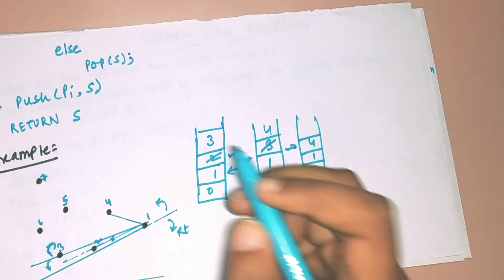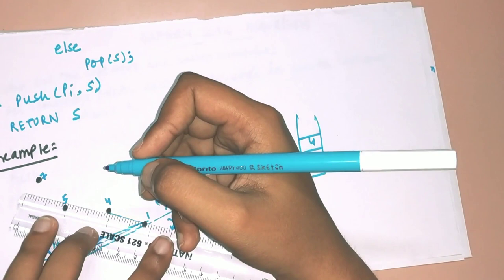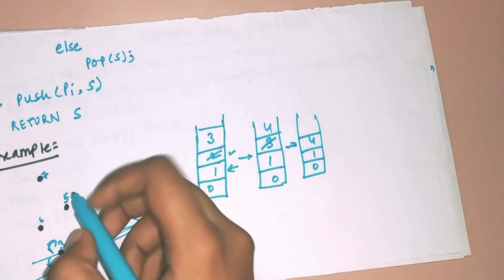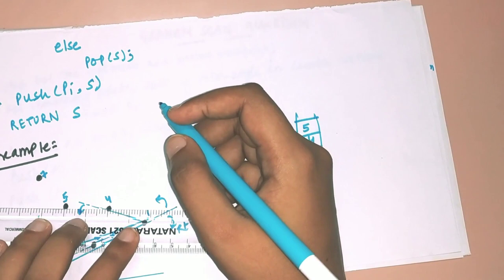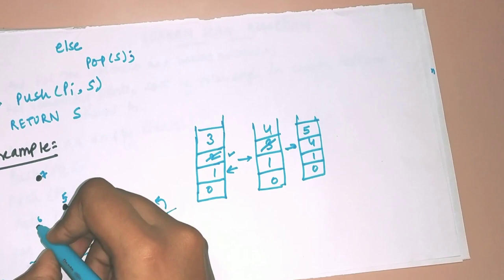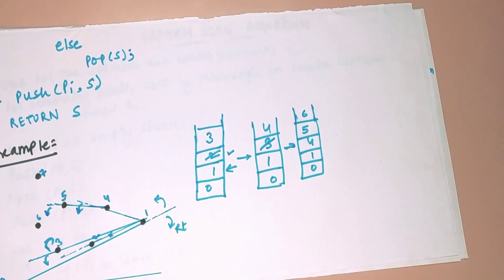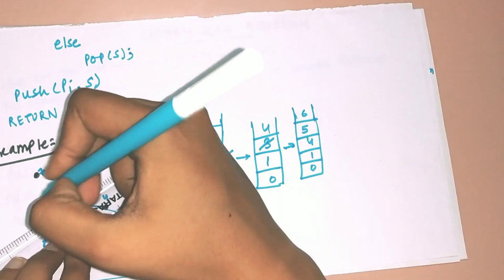For p5, extending the line from p1 to p4, I can see that p5 lies on the left-hand side, so I push p5 into the stack. My polygon now includes p5. Next is p6 — extending the line from p4 to p5, p6 lies on the left-hand side, so I push p6 as well. Remember: you pop only if the point is on the right; otherwise you push.